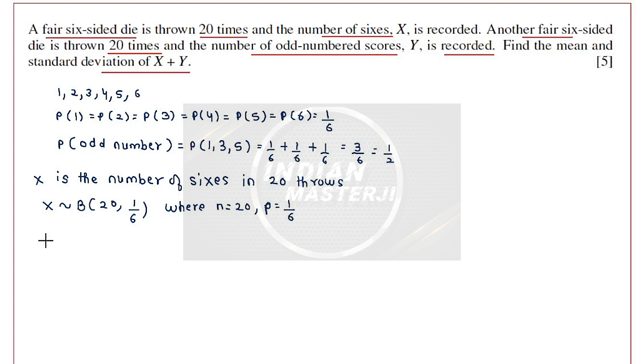So if X follows binomial distribution, then the mean of X will be equal to n into p, that is 20 into 1 by 6, which is equal to 10 divided by 3. And variance of X will be equal to n into p into q, that is 20 into 1 by 6 into 5 by 6. If I solve this, I get this as 25 by 9.